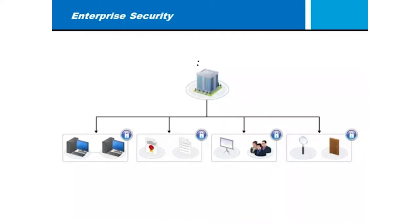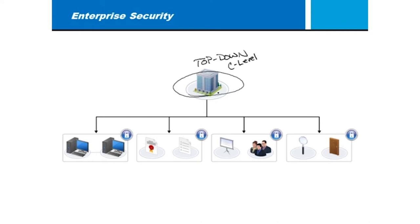When we talk about enterprise security, we're going to look at it from what many of us call the top-down approach. Top-down simply means that at the very top of the organization — what we call the C-level people, the CEOs, CIOs, CFOs — they should be concerned with ensuring proper implementation of security. From the top, you should see all these different facets of security.